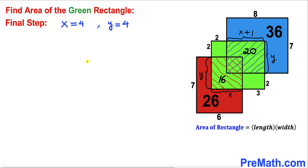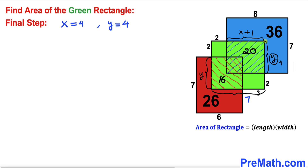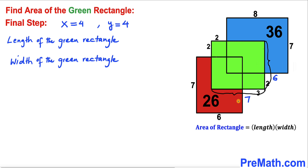Here's our final step. We found x equals 4 and y equals 4. Substituting these values, this side of the green rectangle is x plus 3 equals 4 plus 3, which equals 7 units. Likewise, this side of the green rectangle is y plus 2 equals 4 plus 2, which gives us 6 units. So the green rectangle has length 7 units and width 6 units.